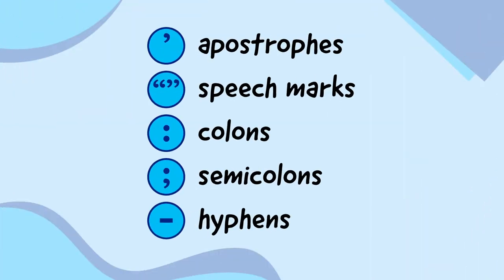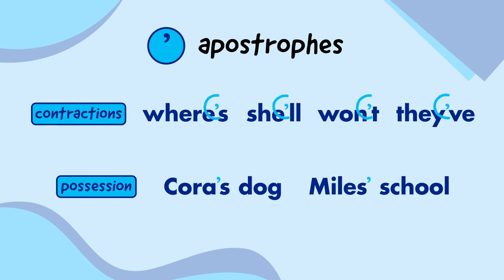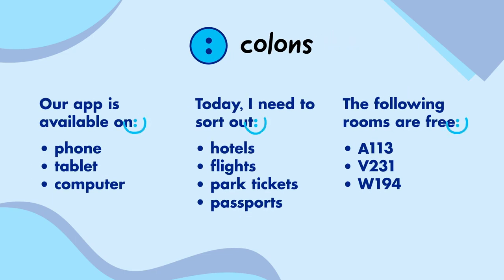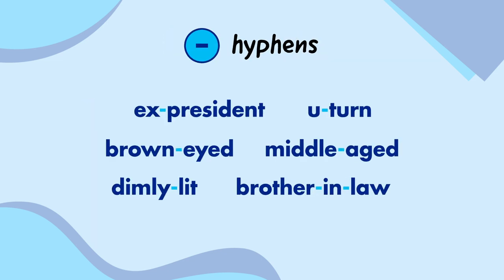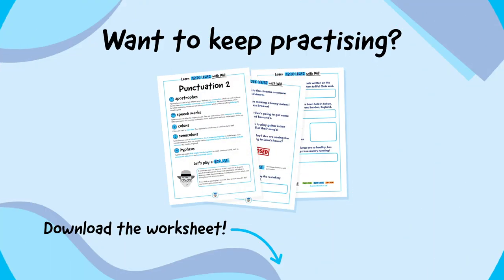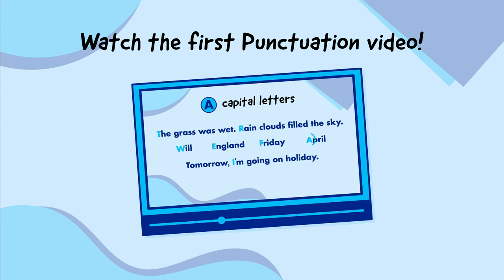Okay, let's quickly remind ourselves of the types of punctuation one more time. Apostrophes are used to show contractions and possession. Speech marks show when someone is talking. Colons begin lists. Semicolons link phrases or short sentences together and separate list items that already use commas. And hyphens link words together to create compound words. If you want to keep practicing, download the worksheet in the video description. If you haven't already, make sure to watch the first punctuation video to learn about capital letters, full stops, commas, exclamation marks, and question marks.